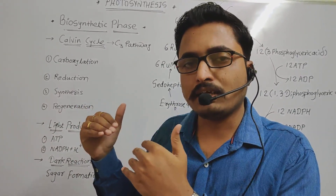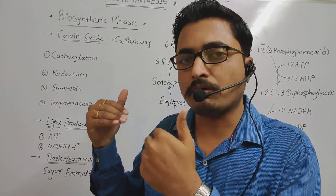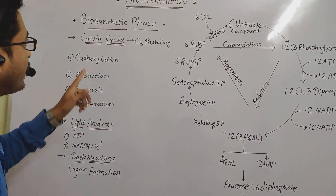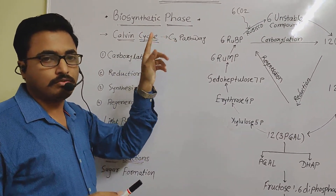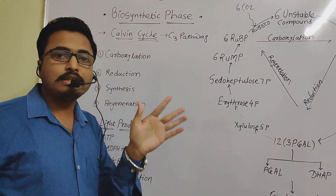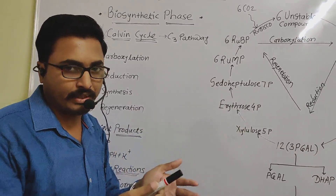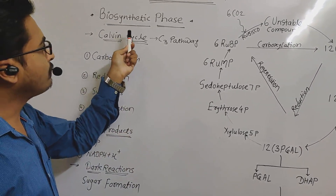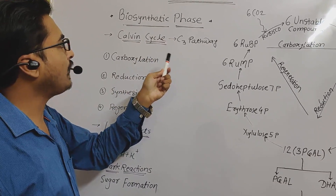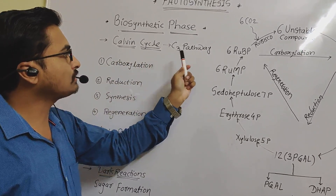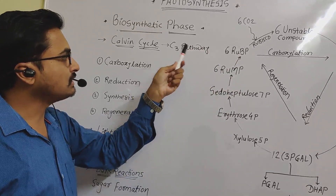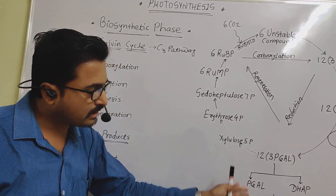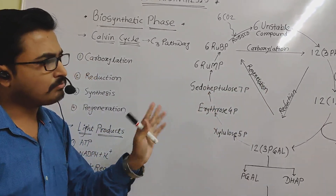The first stable product is a 3-carbon containing compound, so this is known as the C3 pathway. The biosynthetic phase is the phase in which there is a formation of something — here, the formation of glucose molecules and sugar molecules. The basic biosynthetic phase includes the Calvin cycle, also known as the C3 cycle or C3 pathway. This process is cyclic in nature.